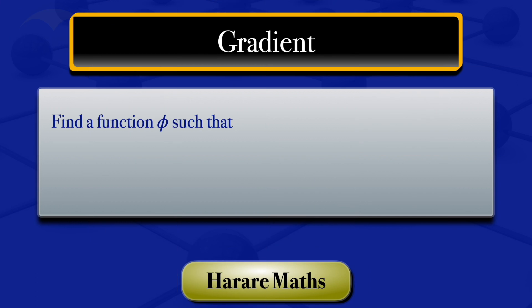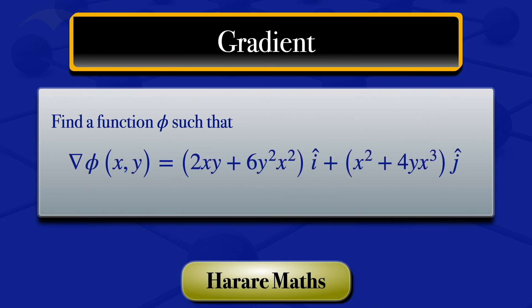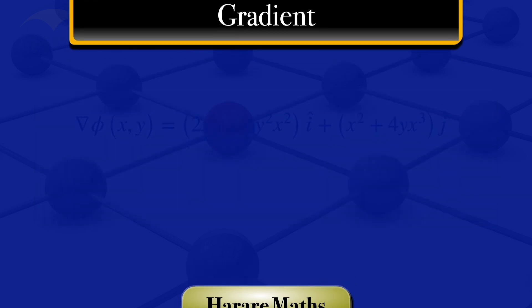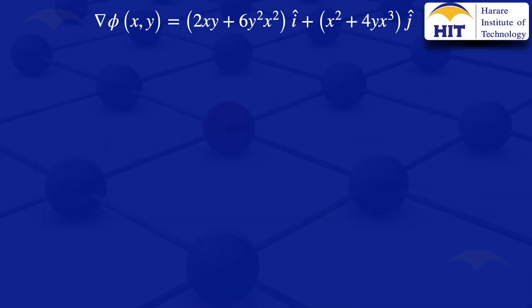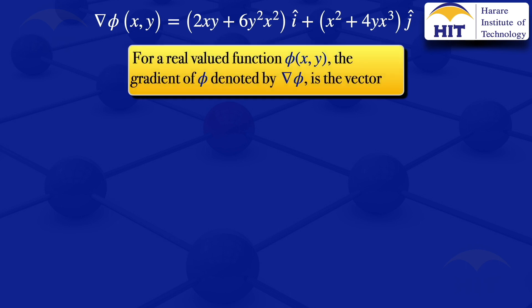In this video, I'm going to find the function φ such that grad φ equals (2xy + 6y²x²)i + (x² + 4yx³)j. We are given grad φ with two variables x and y. By definition, grad φ has two components: the partial derivative of φ with respect to x times i, plus the partial derivative of φ with respect to y times j.